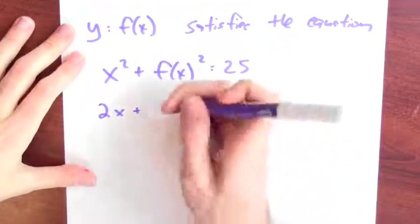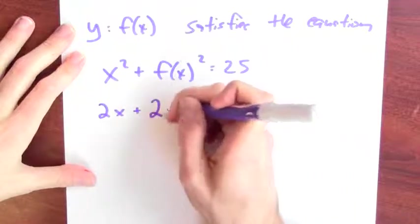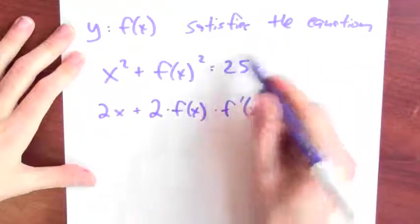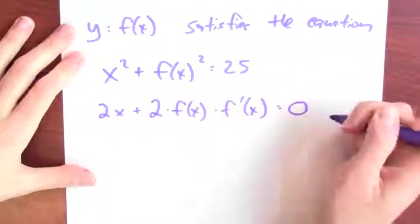I'm going to use a chain rule to do that. It's the derivative of the outside function at the inside times the derivative of the inside function equals the derivative of 25, which is 0.